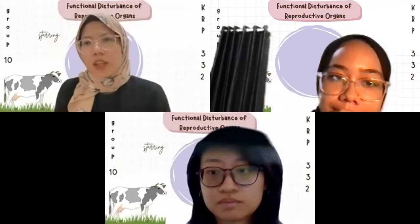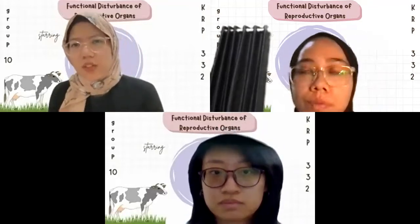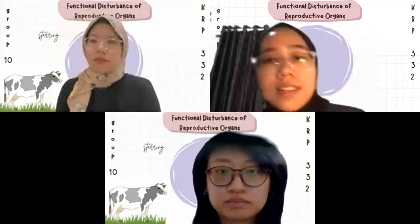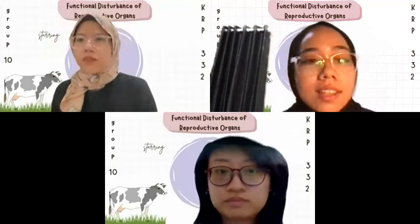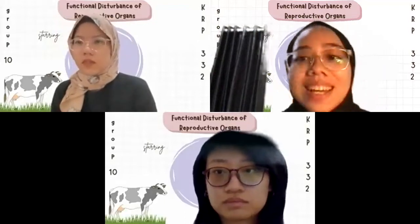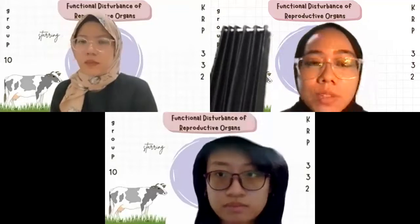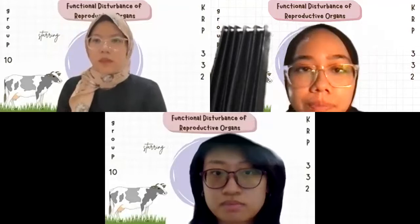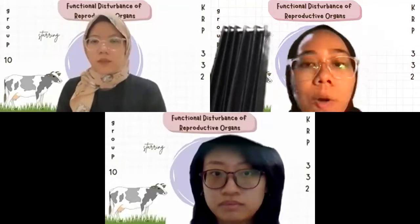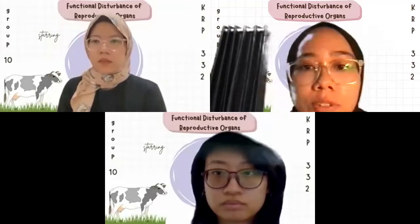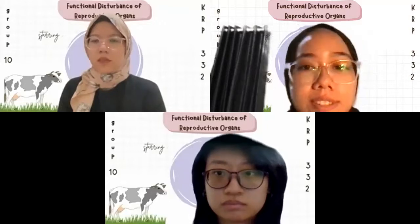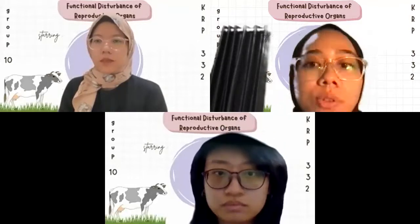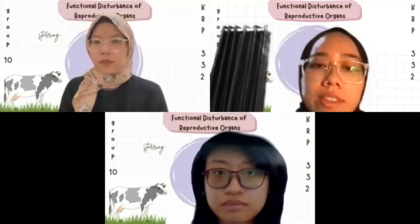Anestrus can be categorized into two parts depending on the presence or absence of corpus luteum. The first category is corpus luteum presence on one ovary, occurring due to pregnancy, persistent corpus luteum, silent heat, or cystic corpus luteum. The second category is the absence of a functional corpus luteum with a small-sized ovary. This type of anestrus occurs due to nutrient deficiency, cystic ovary, and other disturbances.